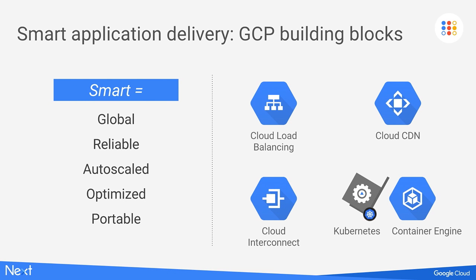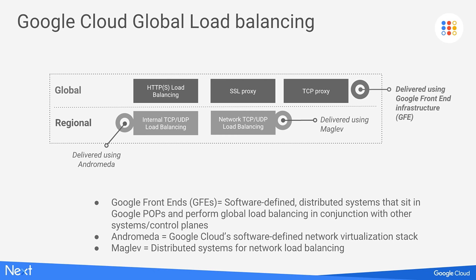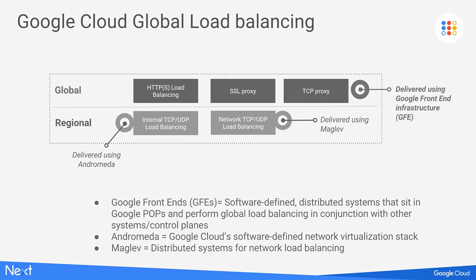Before talking about global load balancing, let's talk about Google Cloud load balancing. Forget everything you know about load balancers — let's start fresh. We have five types of load balancing solutions, and we'll focus on global load balancing. HTTP load balancing for HTTP and HTTP/2 traffic, HTTPS load balancing for HTTPS traffic, SSL proxy for TLS traffic, and TCP proxy for unencrypted non-HTTP traffic.